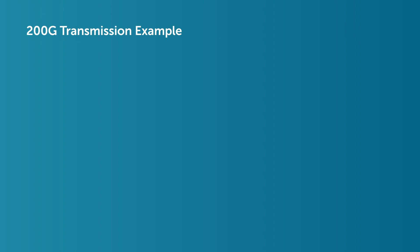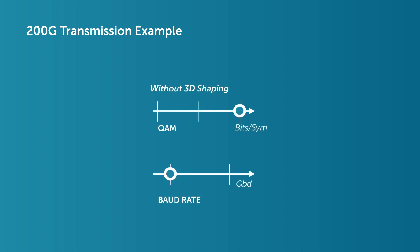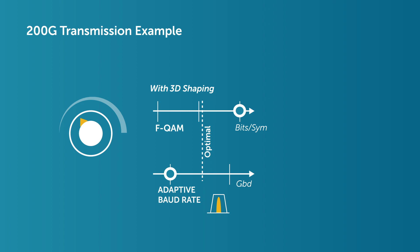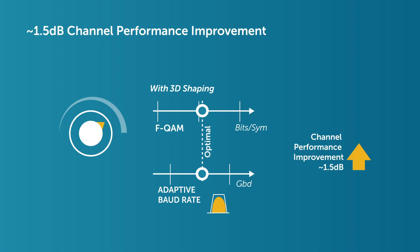Now that you are familiar with 3D shaping, what does it mean in practice? Consider transmission of 200 GHz across an optical channel based on 50 GHz spacing with few ROADM nodes. By increasing the baud rate to fill the available spectrum and operating with a lower modulation order, nearly 1.5 dB improvement in performance can be achieved.